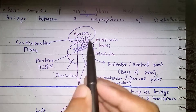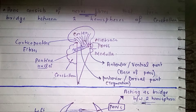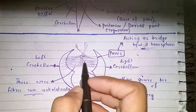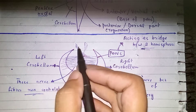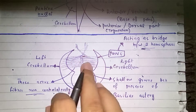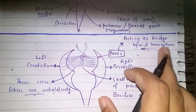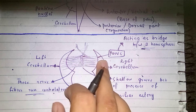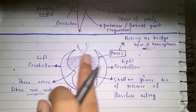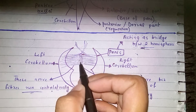From the pontine nuclei, these fibers move into the cerebellum, forming the cortico-pontine-cerebellar pathway. These fibers coming from the cortex run contralaterally — the nerve fibers from the right side cross to the left cerebellum and from the left side to the right cerebellum. So these nerve fibers run contralaterally to the opposite side, and PONS acts as a bridge between the two hemispheres of the cerebellum — the right cerebellum and the left cerebellum.